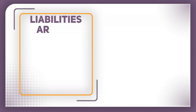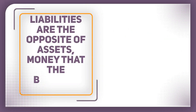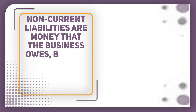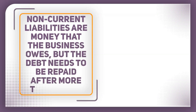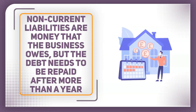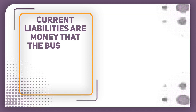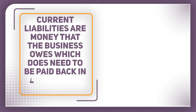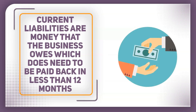Liabilities are the opposite of assets. This is money that the business owes to someone else. Non-current liabilities are monies that the business owes but the debt needs to be repaid after more than a year. Good examples of this are mortgages and other long-term loans. Current liabilities are money that the business owes which does need to be paid back in less than 12 months. This could include an overdraft, a very short-term loan, or creditors — where the business has been given credit meaning time to pay its bills — but importantly they need to be paid back over a shorter period of time. The liability is current.